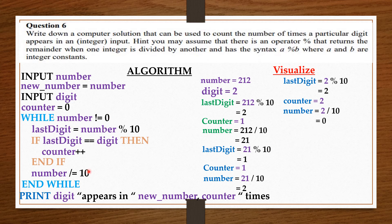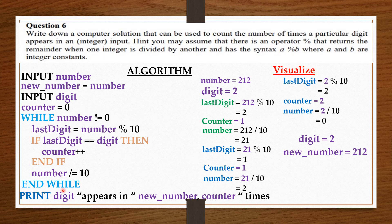We print: digit, which is 2, appears in new number, 212. Now you see the reason why we saved the copy of number in new number — because at the end of the while loop the number is going to be 0. That is why we saved the copy of the original number in new number, so that we can print it here. So new number equals 212 and counter is 2, meaning the digit 2 appears in 212 two times. I will encourage you to take your time and think through it. Let's convert this algorithm to code in C++ and see how it runs.